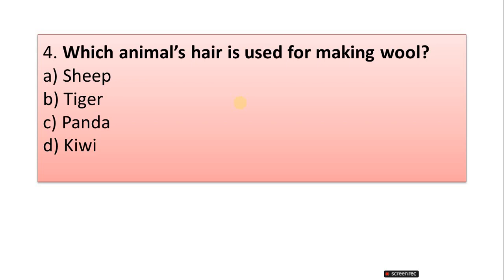Question 4: Which animal's hair is used for making wool? A. Sheep, B. Tiger, C. Panda, D. Kiwi. Correct answer is option A, Sheep.